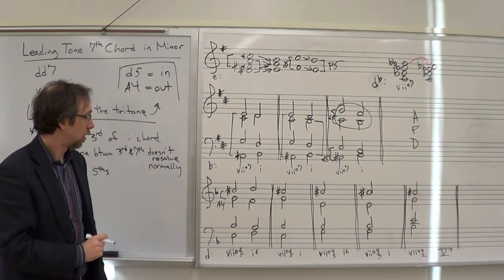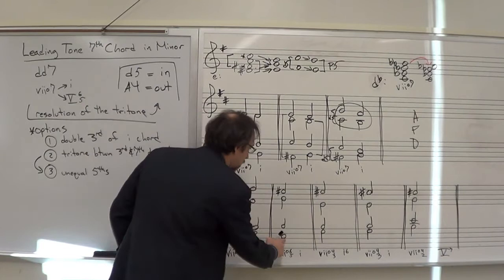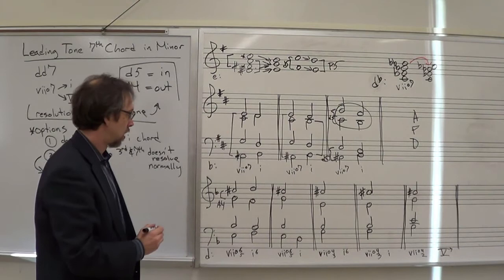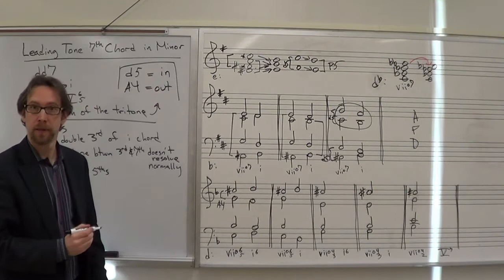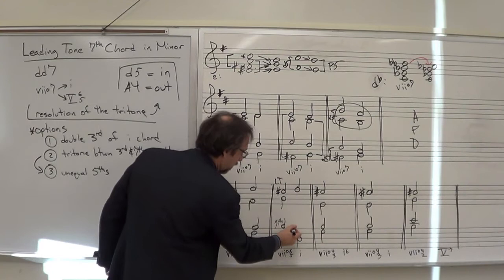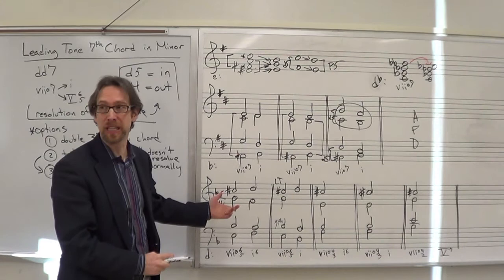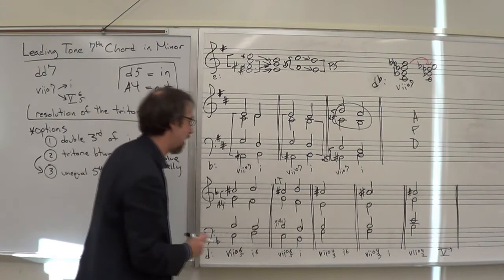Resolving the seven diminished six-five to root position one: the bass E steps down to D, C-sharp must resolve up to D as the leading tone, and the seventh B-flat goes down to A. For the G, since we need to complete the chord and don't yet have an F, it steps down to F to complete the D minor triad. These are the step-by-step questions to ask yourself when voice leading these chords.